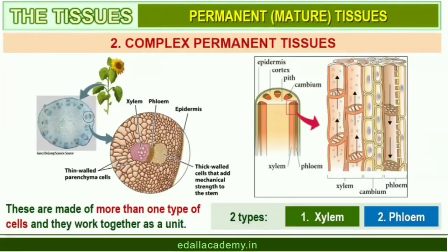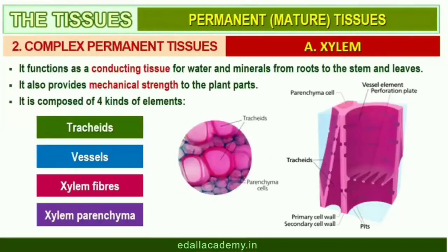Complex tissues are made of more than one type of cells and these work together as a unit. Xylem and phloem constitute the complex tissues in plants. Xylem functions as a conducting tissue for water and minerals from roots to the stem and leaves. It also provides mechanical strength to the plant parts.